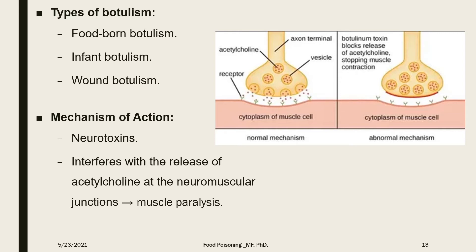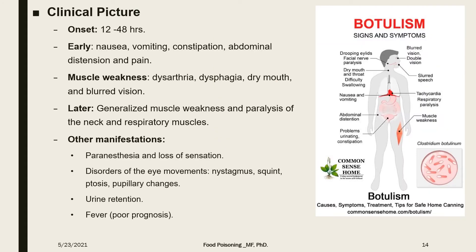The mechanism of action is as a neurotoxin: it interferes with the release of acetylcholine at the neuromuscular junction, leading to characteristic muscle paralysis. Manifestations usually start between 12 to 48 hours and include nausea, vomiting, constipation, and abdominal distension and pain. When it affects the cranial nerves, manifestations include dysarthria, dysphagia, dry mouth, and blurred vision.